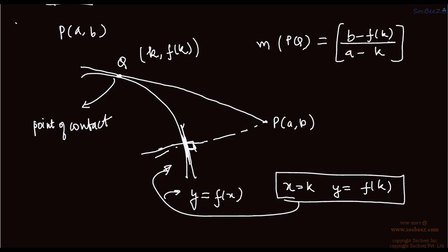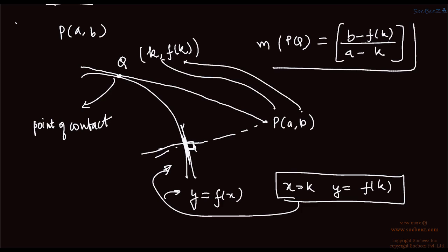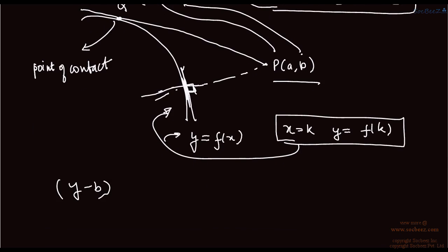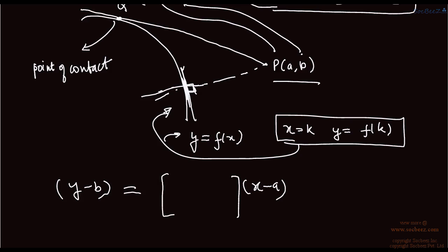Using the slope formula y minus y1 upon x minus x1, the equation of the line from external point P is: y minus b equals b minus f(k) upon a minus k, times x minus a. So this is the equation of the tangent from an external point to the curve y equals f(x).